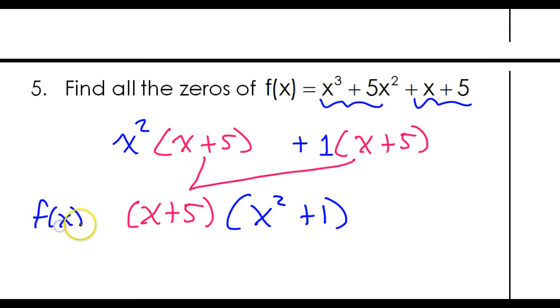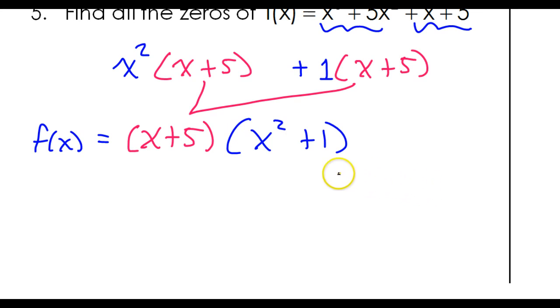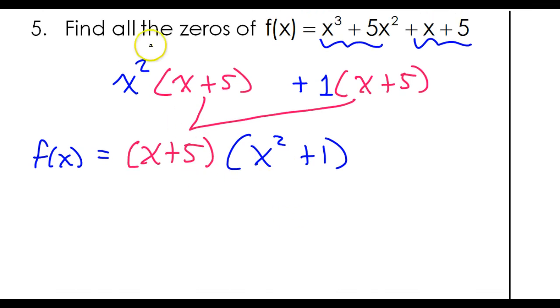So I have f of x, this is equivalent. But now I'm in a position to find the zeros because if I set these factors equal to zero and solve, that's how you get the zeros. So that's what I'm going to do.